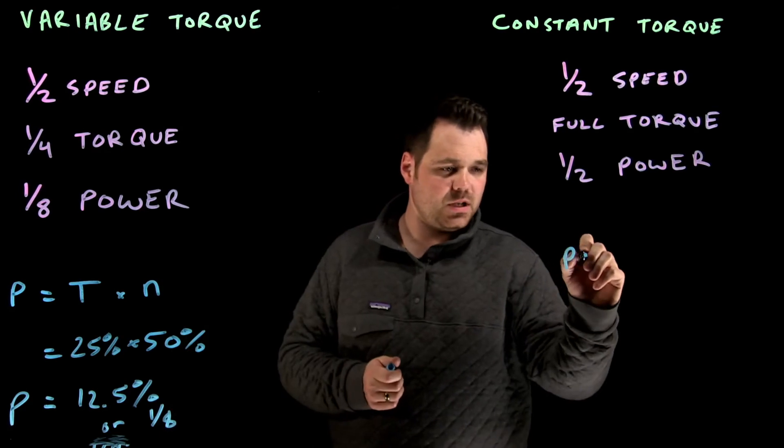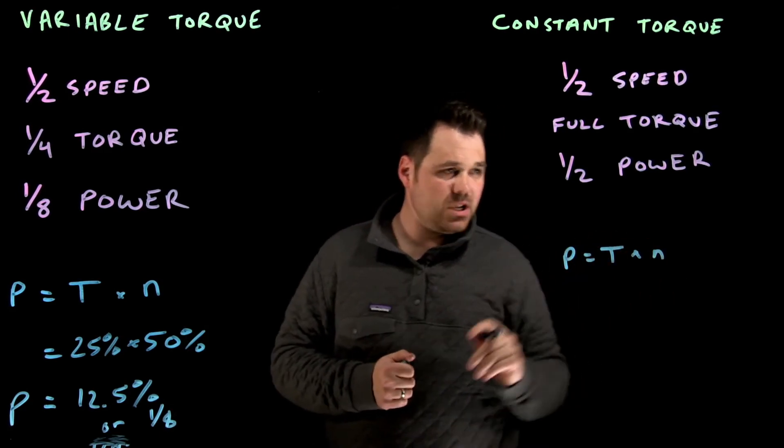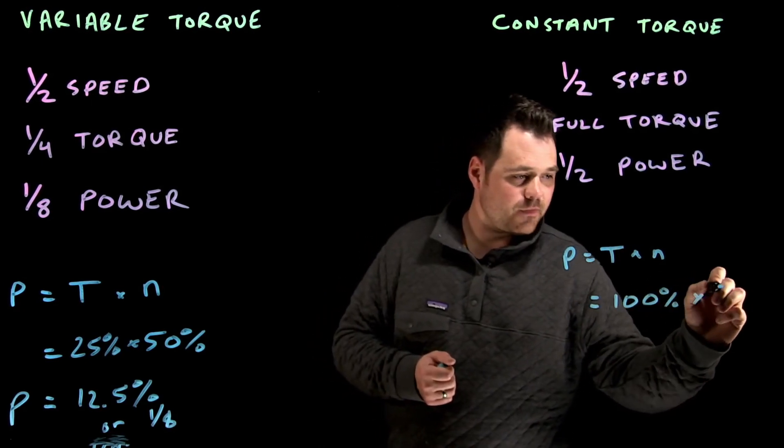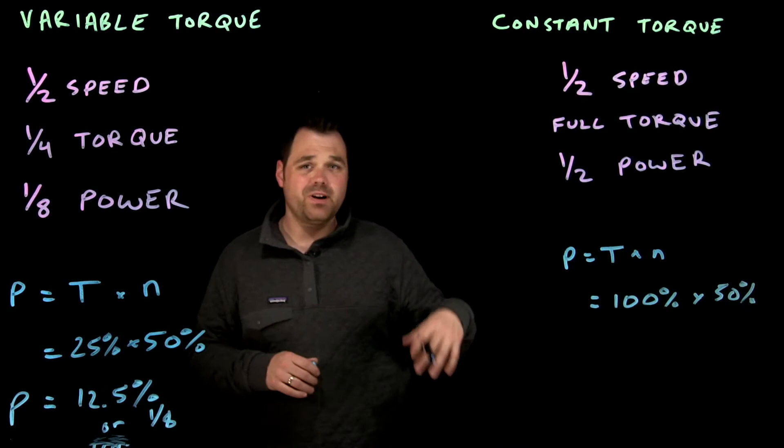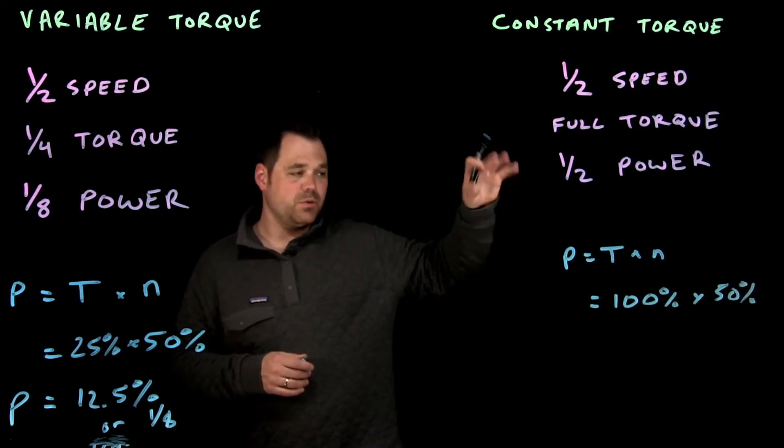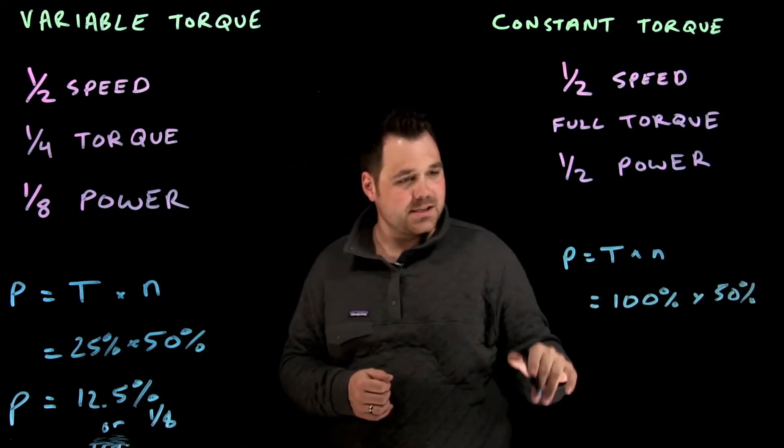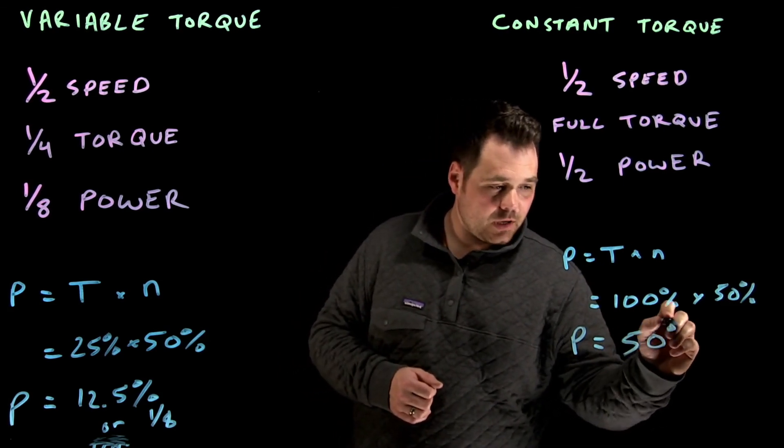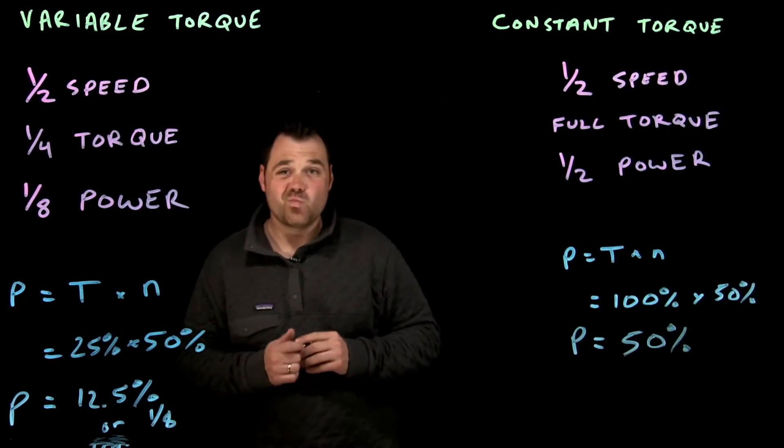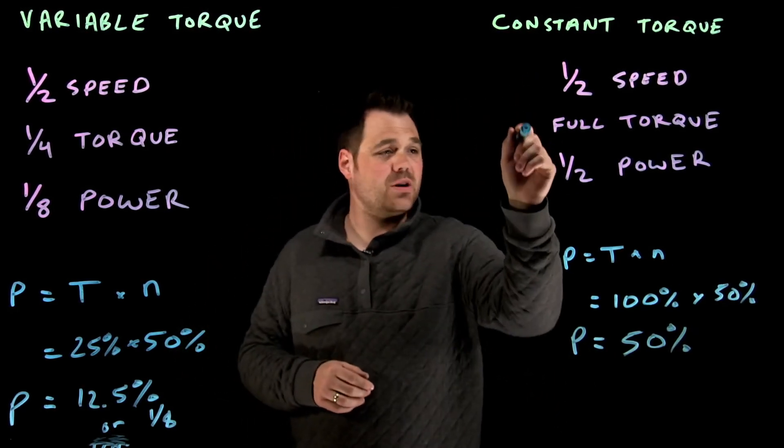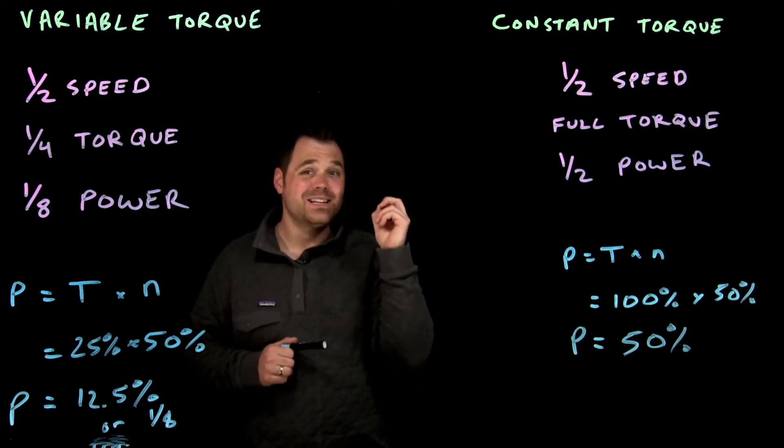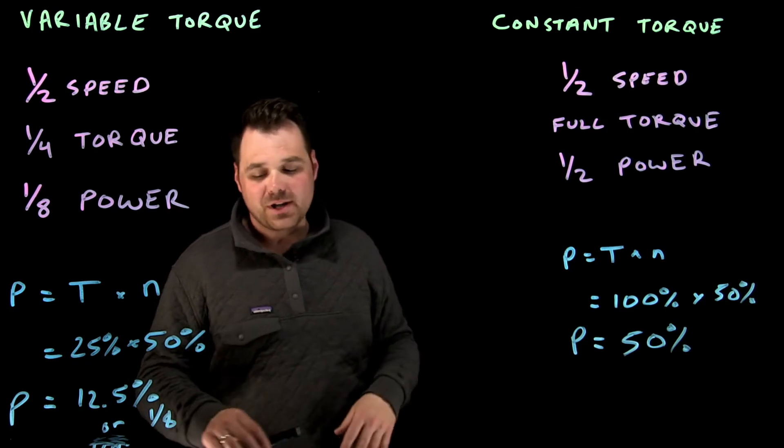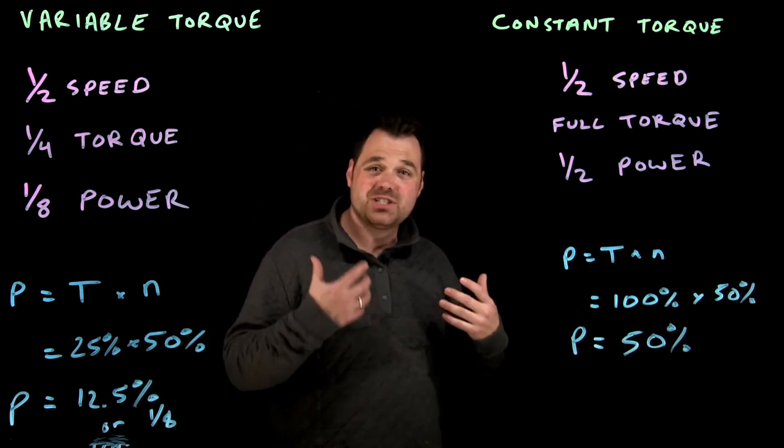Again, same thing. We know our power formula is P equals T times speed. Well, if I'm 100% torque times 50% speed, whether you're divided by, you know, 7121, 52.52, 9.55, whatever it is, that would still mean my power would only be about 50%. So, half speed, full torque only requires that half power, still giving me energy savings just by slowing down that motor. So whenever the motor is not running at full speed, I'm still seeing a little bit of energy savings.